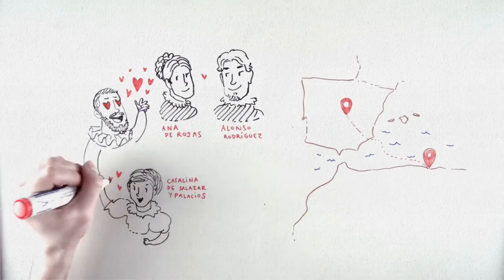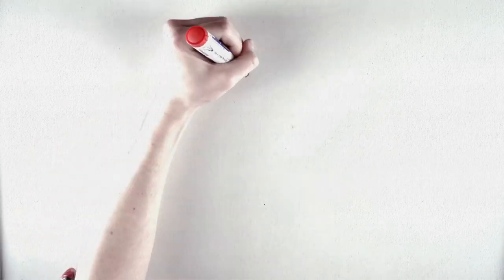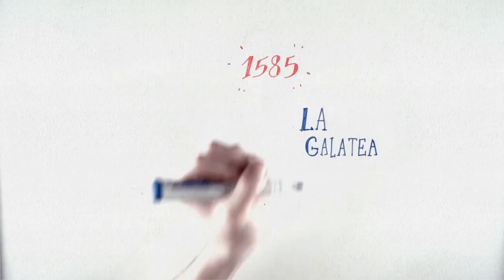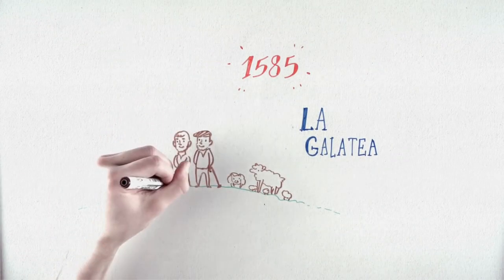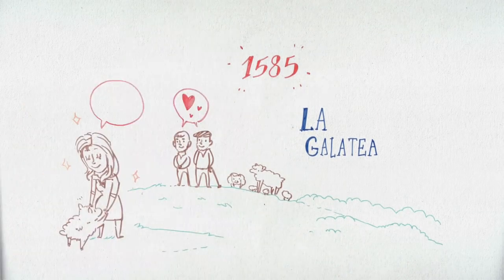And then at 37 years old, Cervantes would marry Catalina de Salazar y Palacios. In 1585, he wrote La Galatea, the pastoral novel depicting shepherds in love with a beautiful shepherdess named Galatea, who nevertheless values her spiritual independence too much.